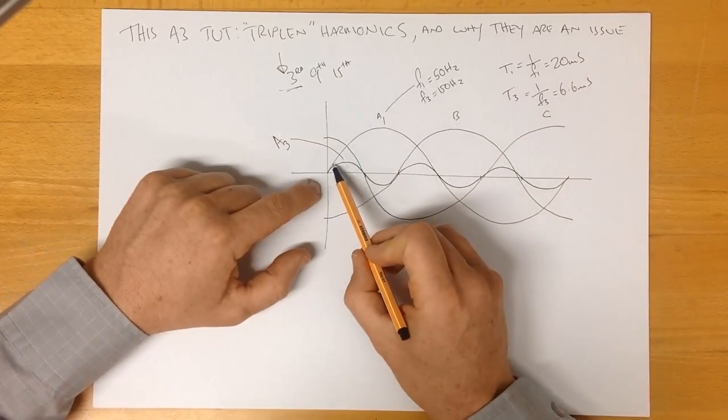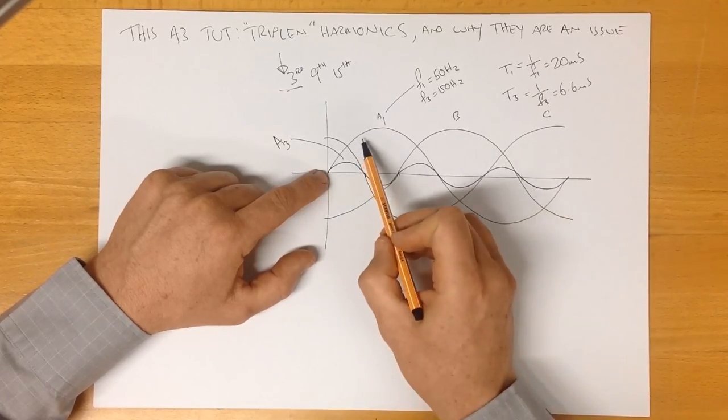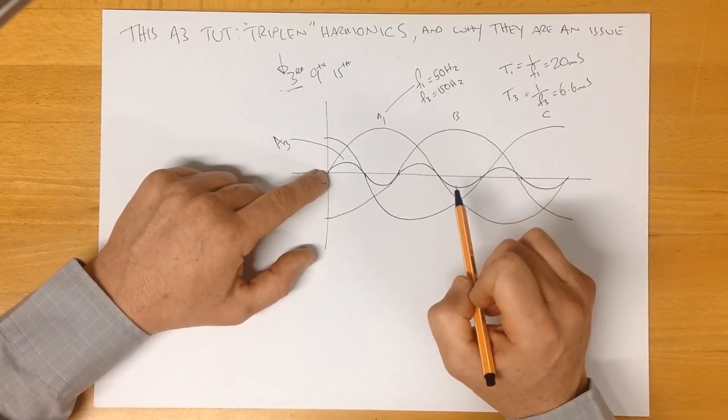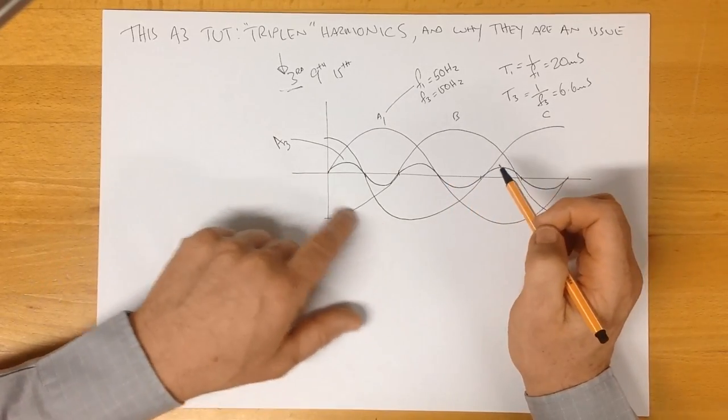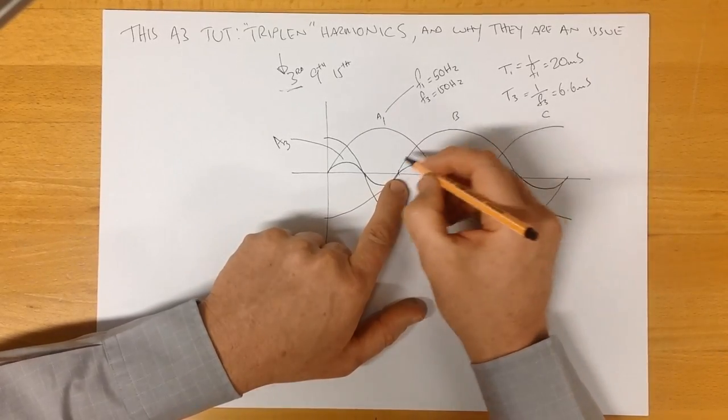Now, we've established that this here is the third harmonic in time for phase A. We can do the same for phase B. So what would be the third harmonic for phase B? We find the zero crossing of phase B which is here and we start to do the same.